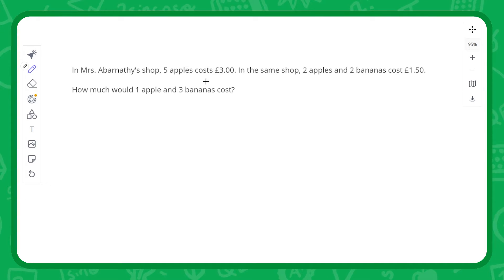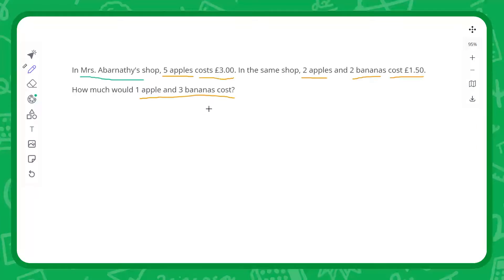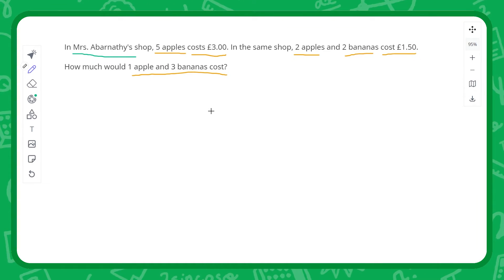Let's go through and highlight all the information that's involved here. We'll highlight what seems to be the useful information. First of all, we've got five apples, they cost three pounds. In the same shop, so that's just sort of laying into the context of the question. Two apples, two bananas cost one pound fifty, and then lastly, how much would one apple and three bananas cost. As far as frivolous information goes, the fact that the shop is owned by the lovely Miss Abernathy isn't really relevant, nor is it really relevant that it's a shop in many ways.